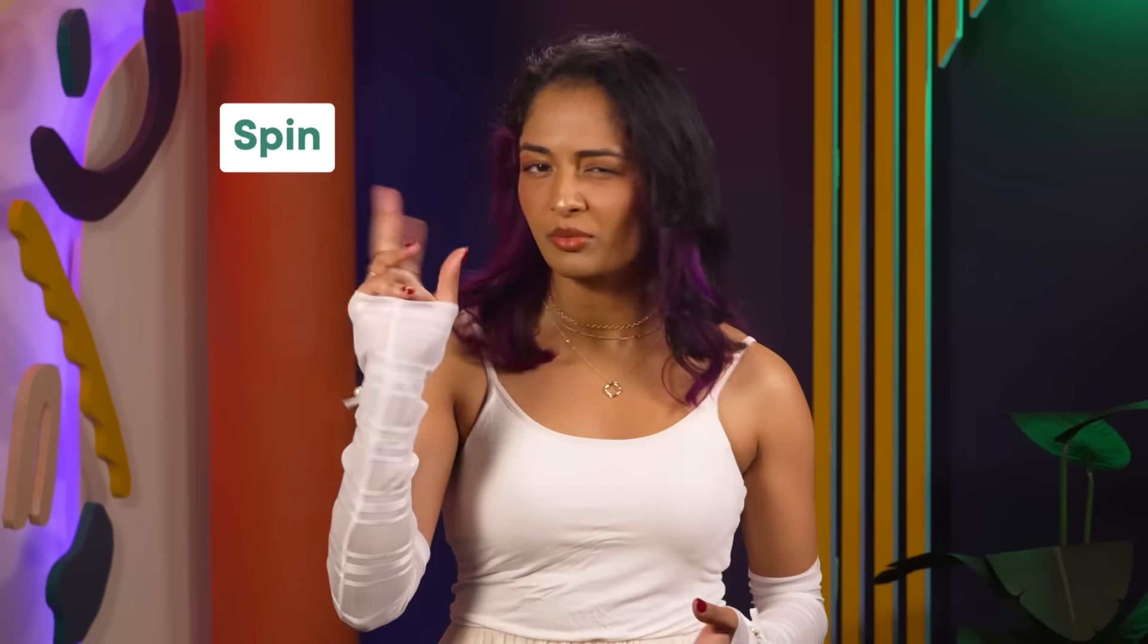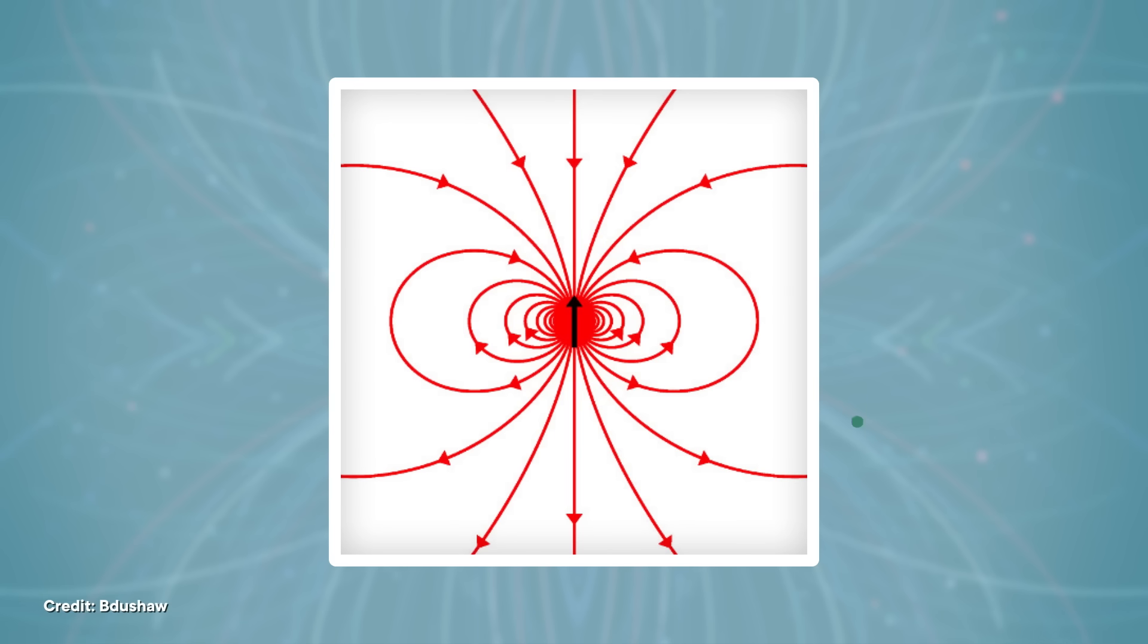For example, particles have a strange quantum property called spin, which is sort of like the momentum they have from spinning around. If a system of these particles is put in a magnetic field, the spins react with the field to provide the system with another source of energy.